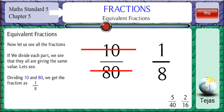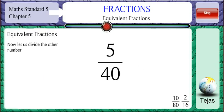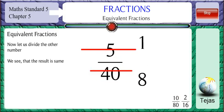How do we simplify 5 by 40? The numbers 5 and 40 are both divisible by 5. So dividing the numerator and denominator by 5, we get 5 ones are 5, 5 eights are 40, 1 by 8.